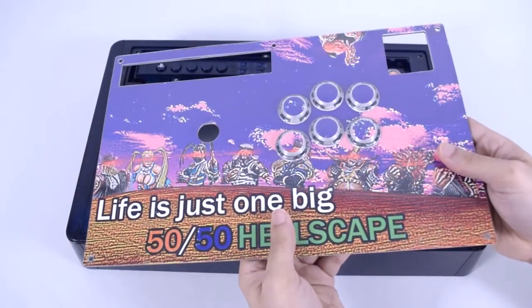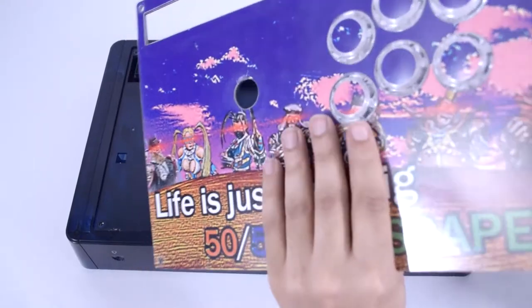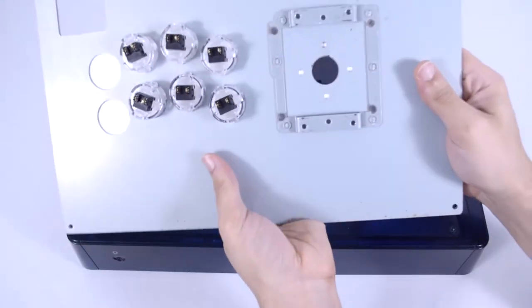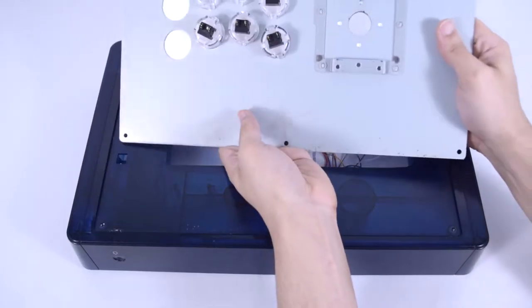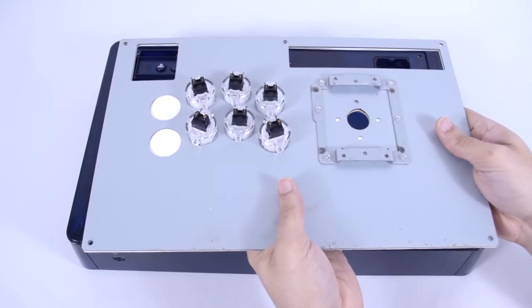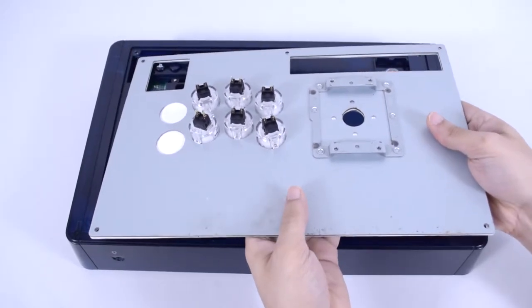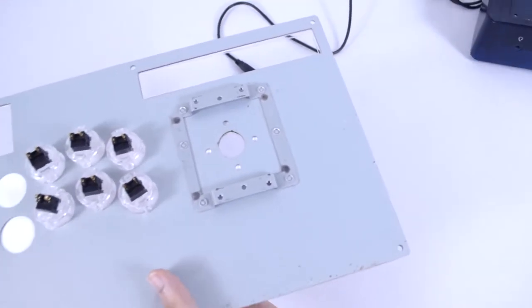If you're like me and chose the Shioken star layout and are reusing buttons, you will need to flip the panel over for button removal. That said, let's push the stick housing aside for now.